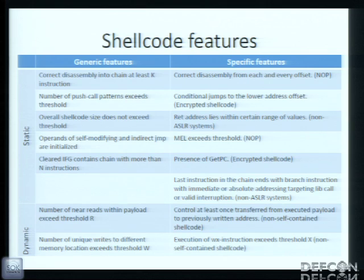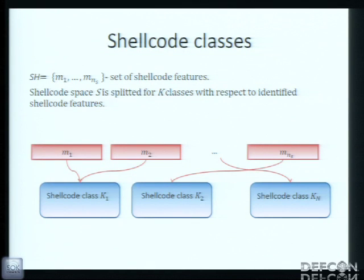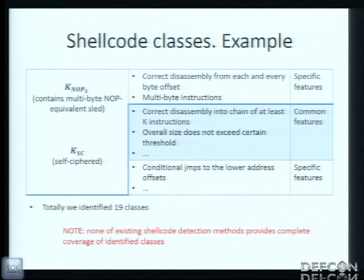At the first step, we try to identify some shellcode features. They could be generic or specific — some of them can be detected only by static analysis, some only by dynamic analysis. We could name specific features such as correct disassembly from each endeavour byte offset, or existence of multi-byte instructions. We could name common features like correct disassembly into a chain of at least N instructions, and so on.